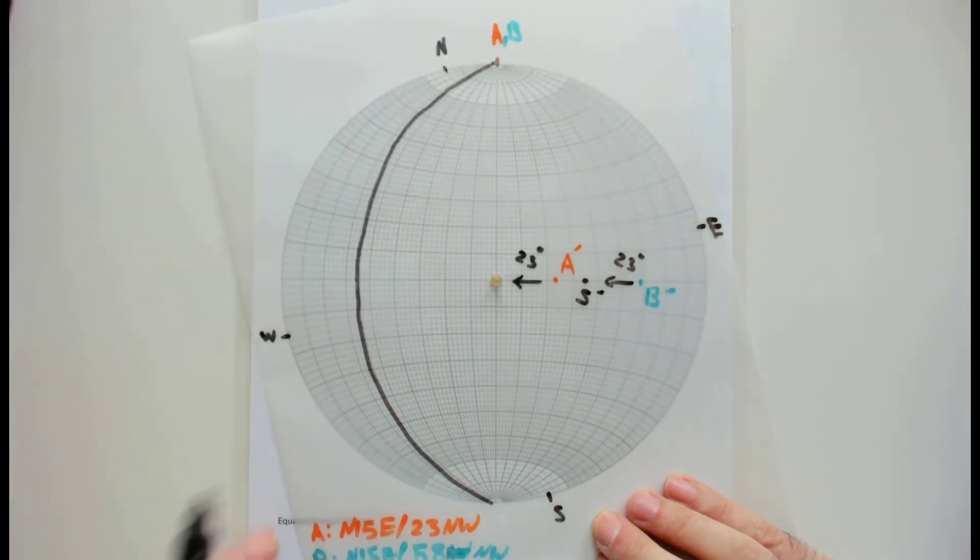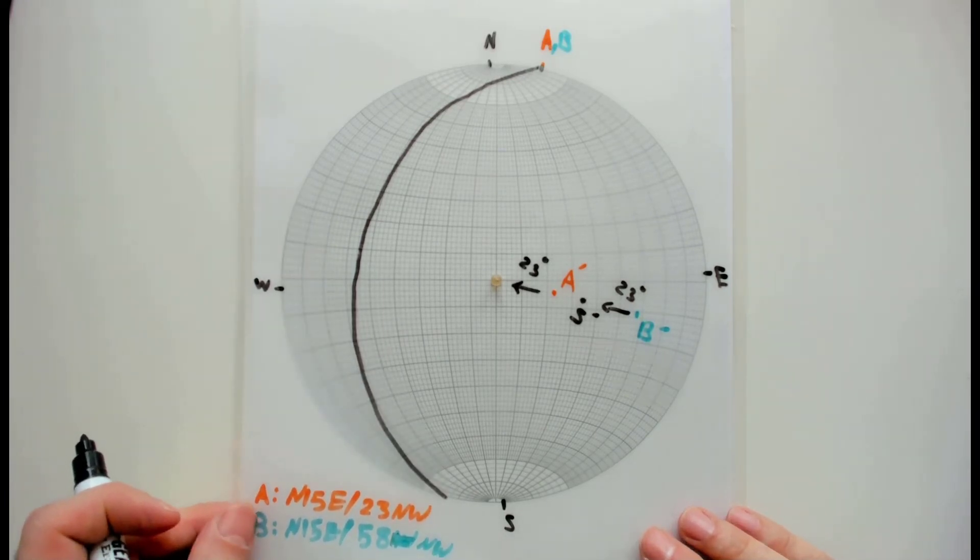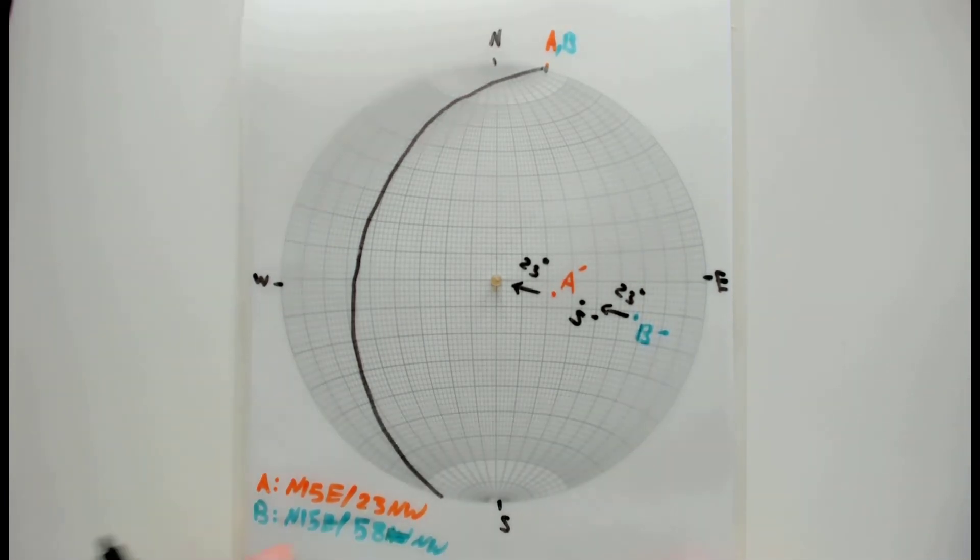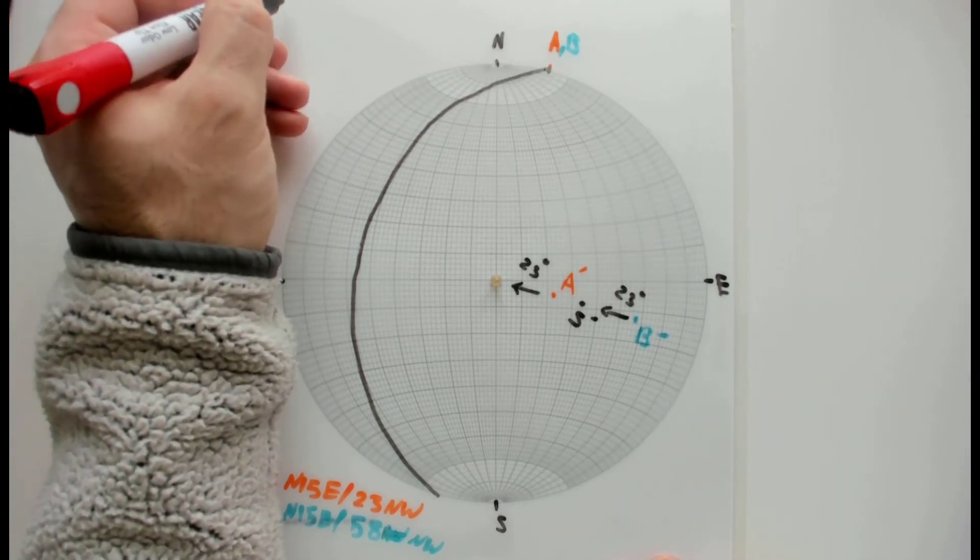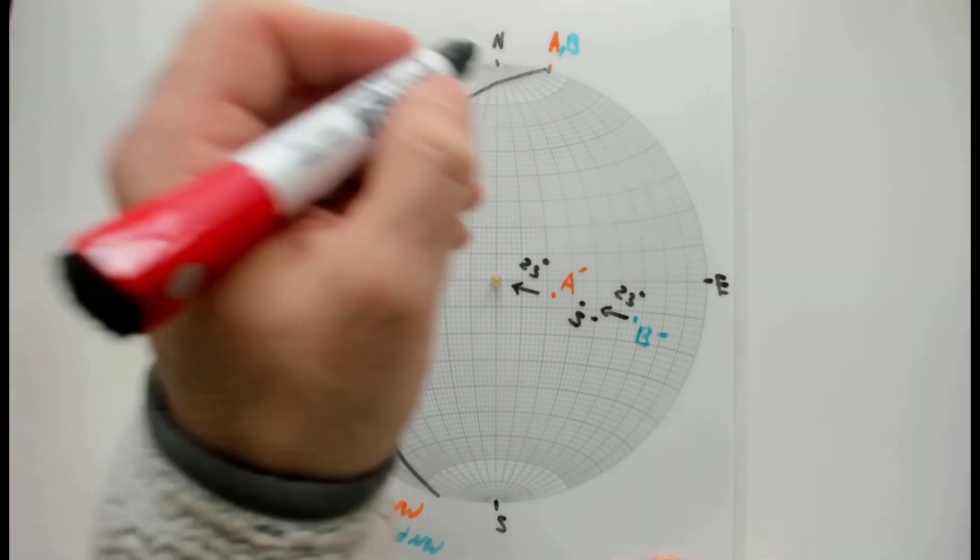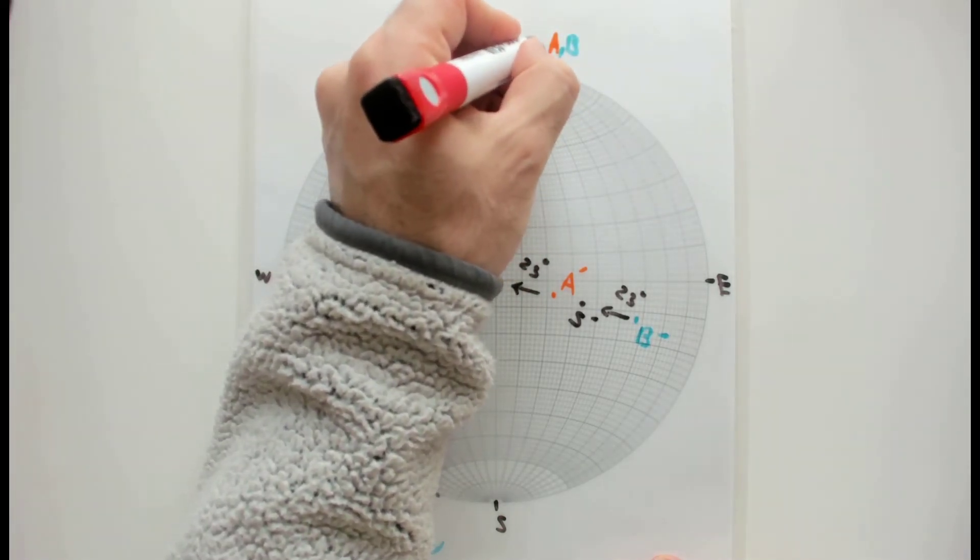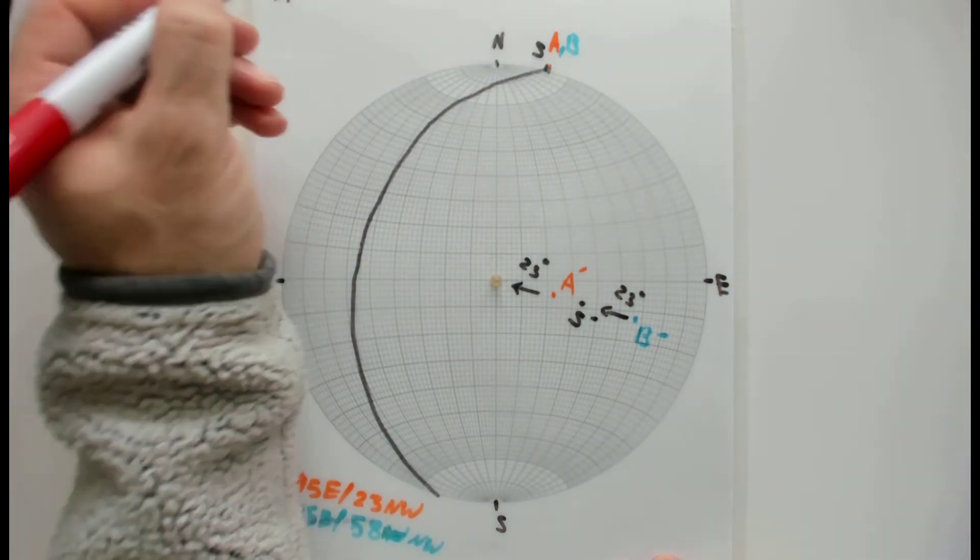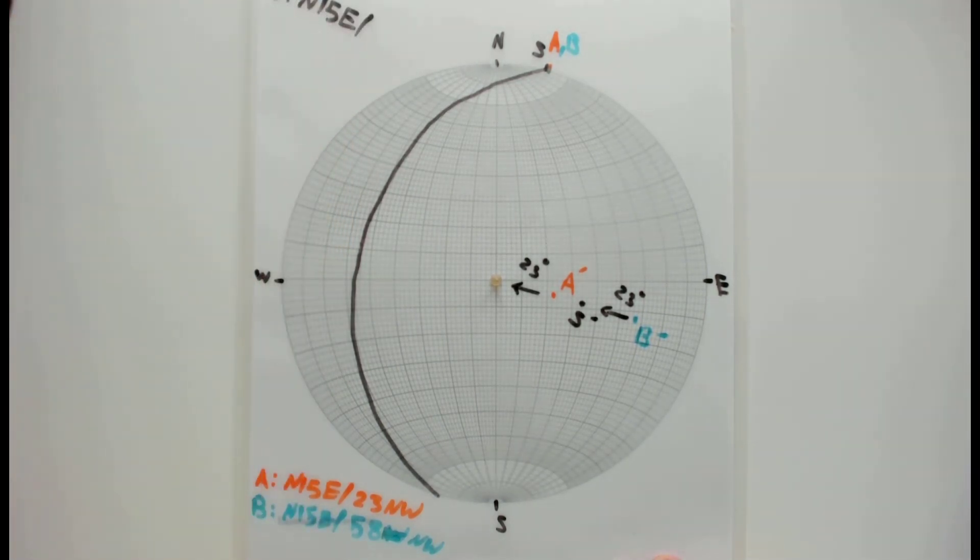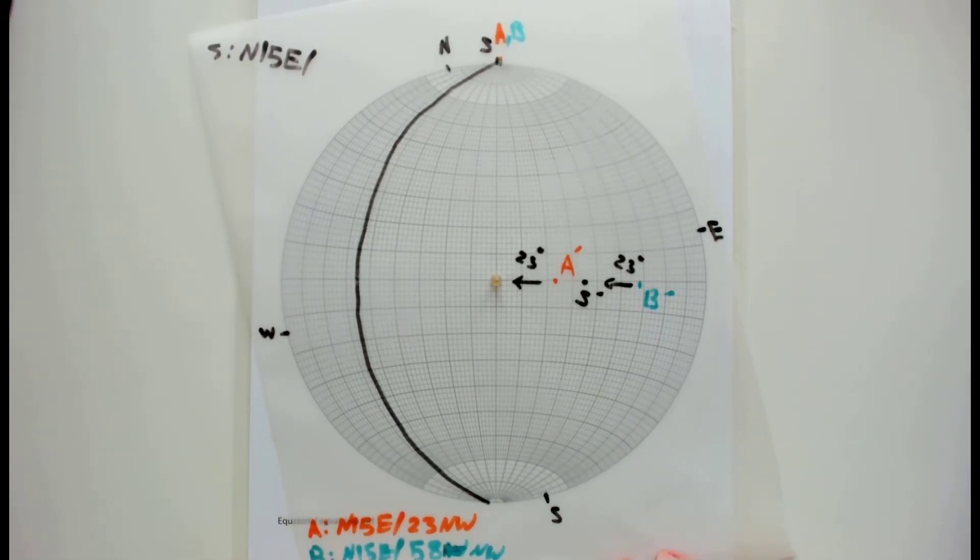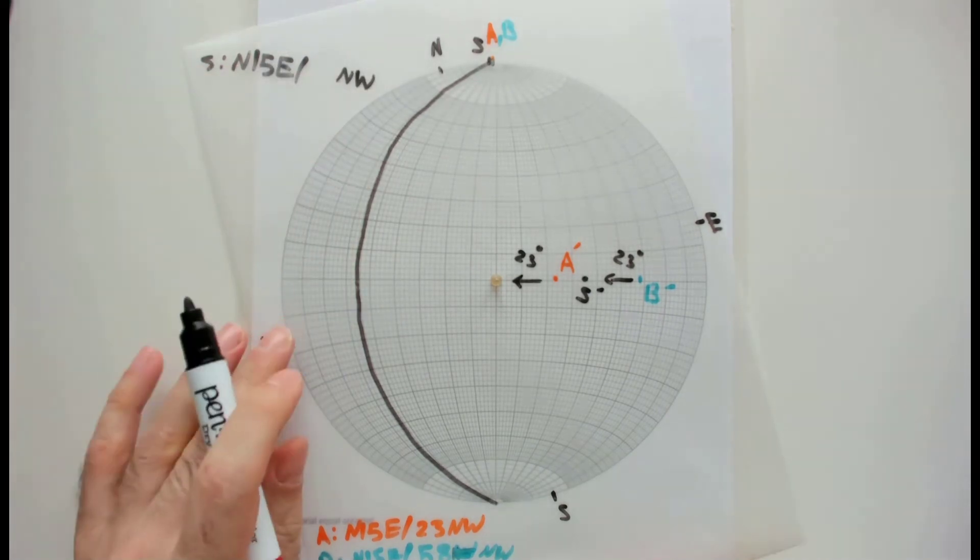As you see, the strike is the same as A and B. This is what we also expect from these numbers, because they are both the same. So you can write here, I'm going to call it S, and S, which is the solution, is N15E.